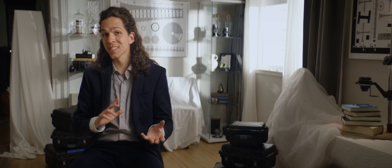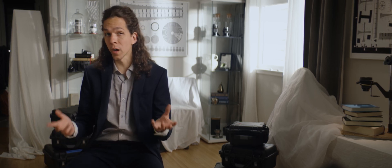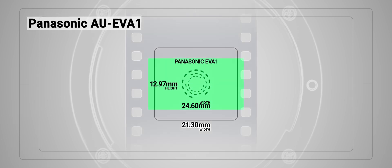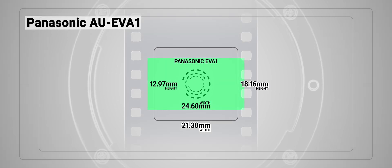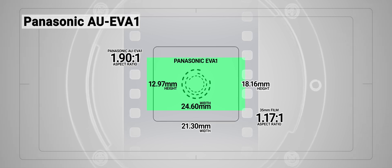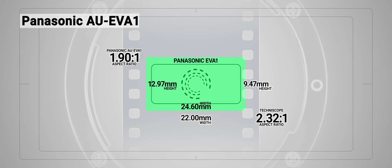To give you some reference, the Super 35 sensor in a Panasonic EVA1 measures 24.6 x 12.97mm. It is a bit wider, yet fairly shorter than the original 35mm film negative area. The aspect ratio is much narrower than 35mm, closer to Techniscope size.